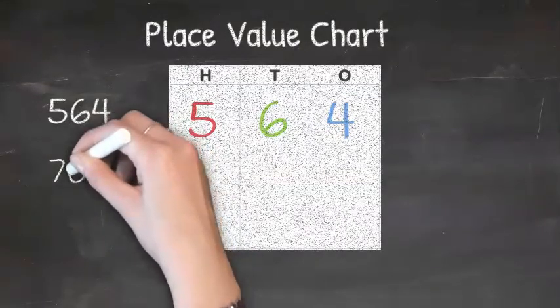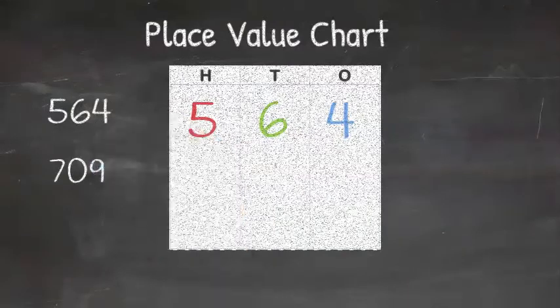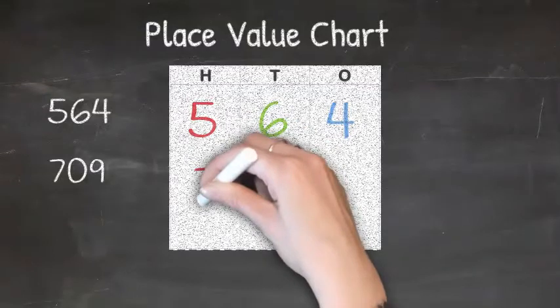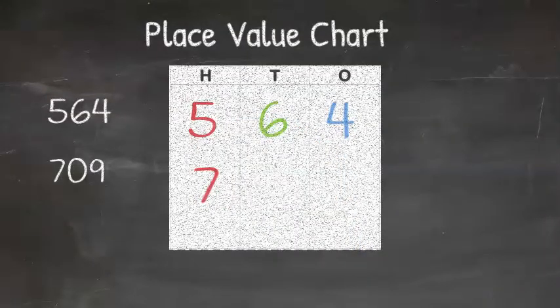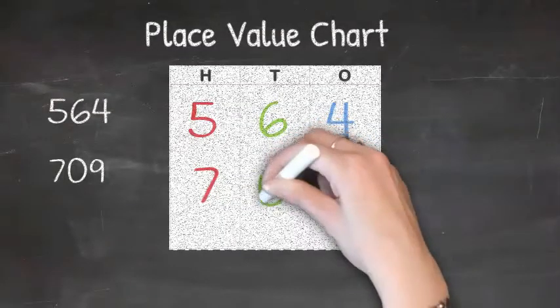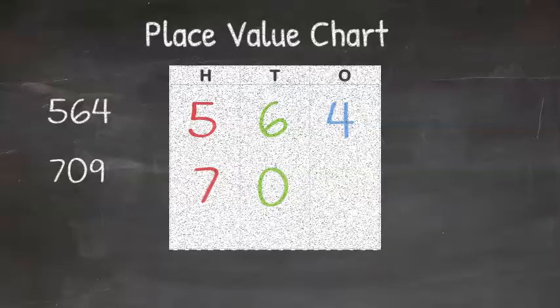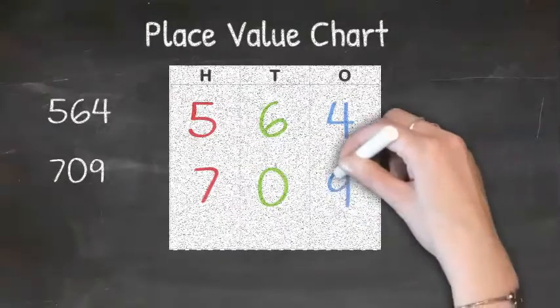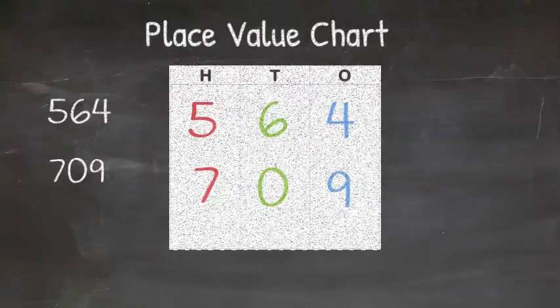Let's try another one. 709. Now, we know that we have 7 hundreds or 700. Now, take note and see that we have 0 tens. We still write 0 as a placeholder. Otherwise, we wouldn't understand the number. So, we still need to write 0 tens. And then we are left with 9 ones or 9, giving us the number 709.